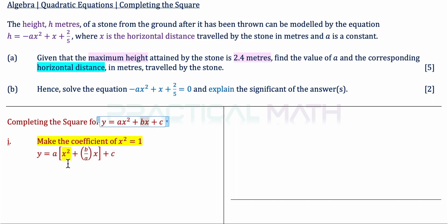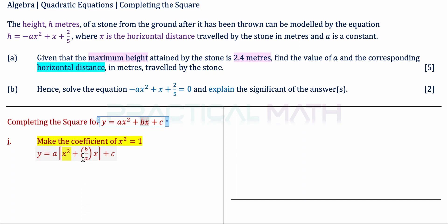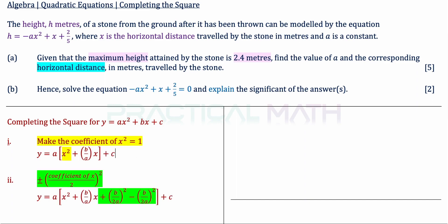We factor out a, open the bracket: x squared — since ax squared divided by a gives x squared — and bx divided by a gives b over a times x. Then close the bracket and add plus c. So that completes Step 1. In Step 2, we add and subtract the quantity (coefficient of x divided by 2) squared. The coefficient of x here is b over a, so half of that is b over 2a.